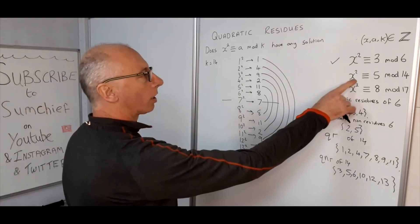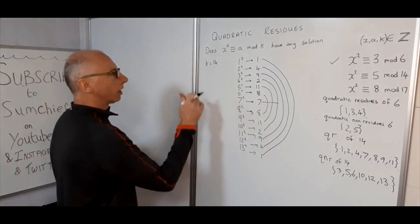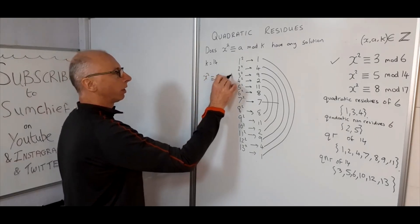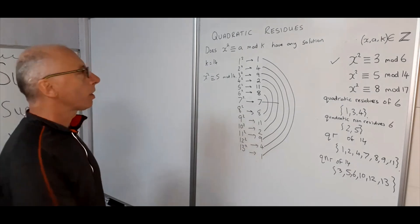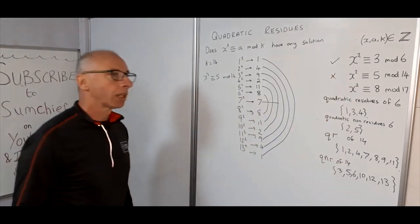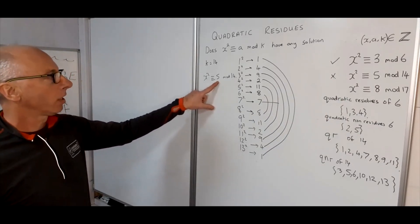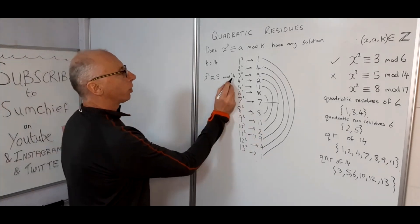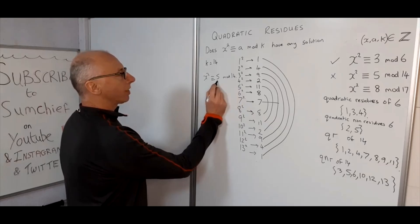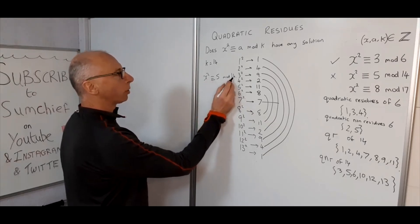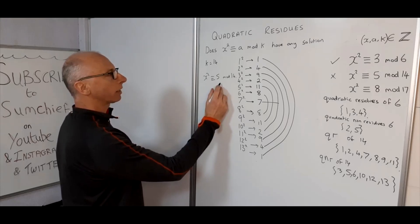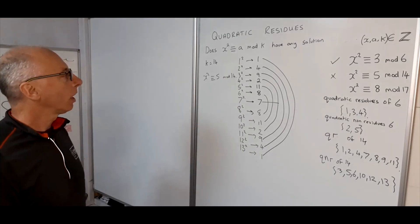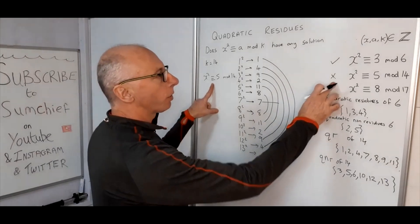The question was x² ≡ 5 (mod 14). Since 5 appears in the non-quadratic residues, this doesn't have a solution. We can verify by adding multiples of 14 to 5: 19, 33, 47, 61, 75, 89, 103, 117, 131, 145, 159, 173, 187 — none of those yield a perfect square, confirming x² ≡ 5 (mod 14) has no solution.